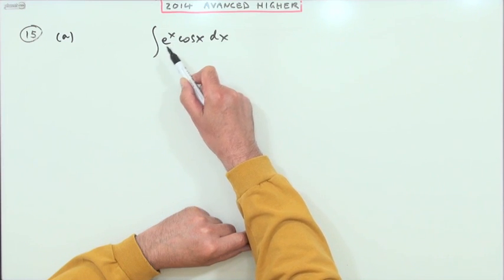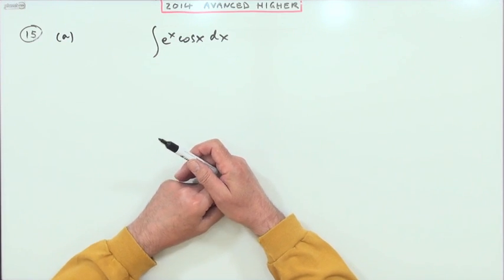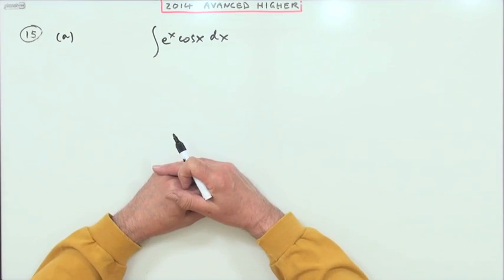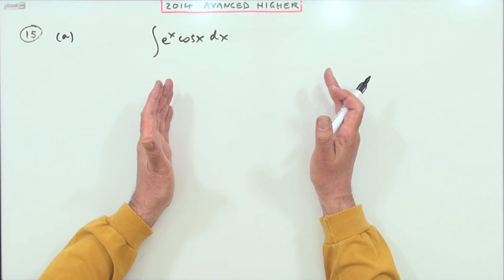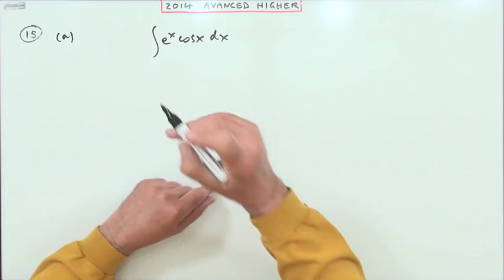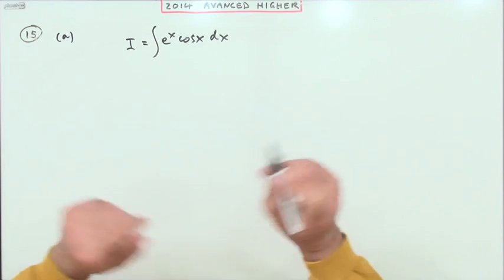But unfortunately both of these keep regurgitating themselves, so don't expect to get a final answer. You're just going to end up eventually back where you started, but that's fine. I'll just call where I started I, that's that integral, and then I'll go ahead: choose one to differentiate, choose one to integrate.